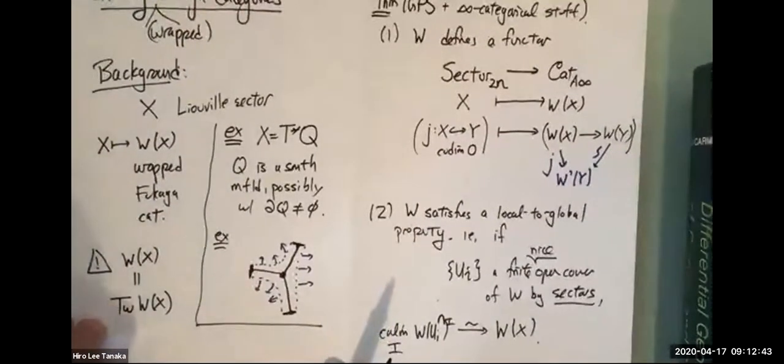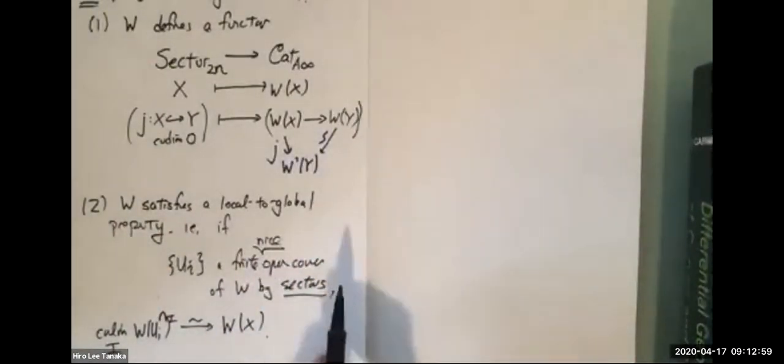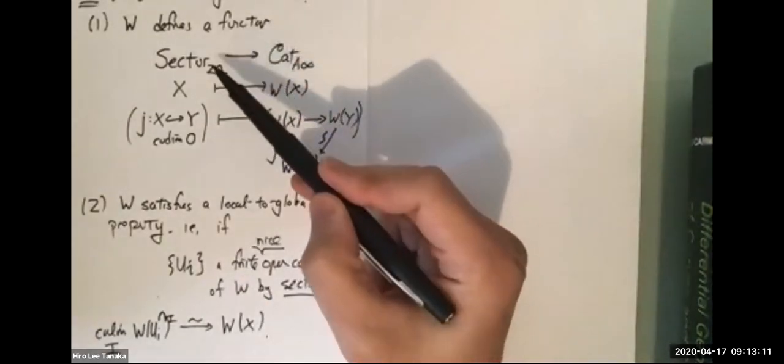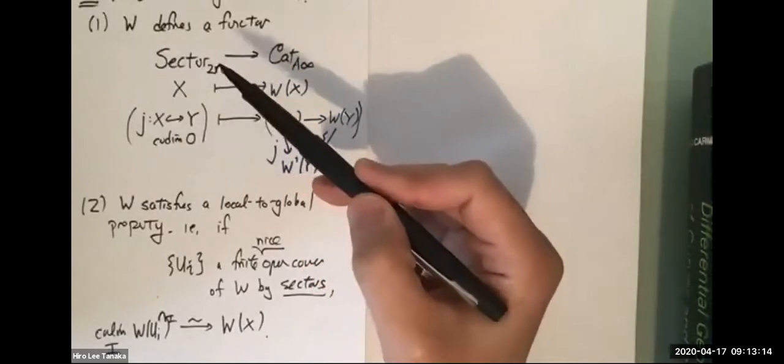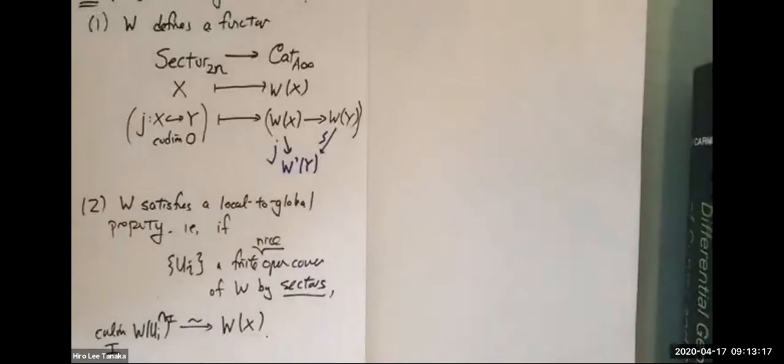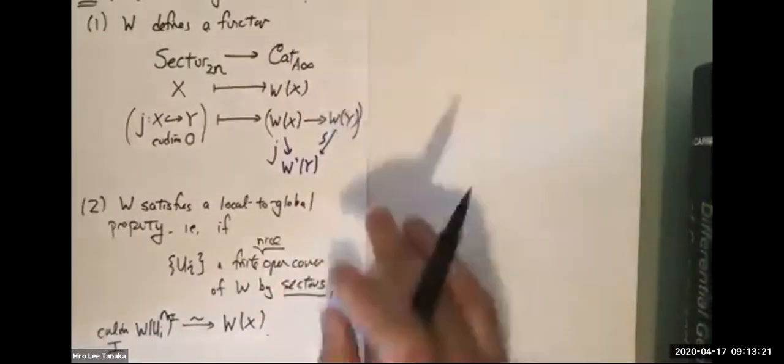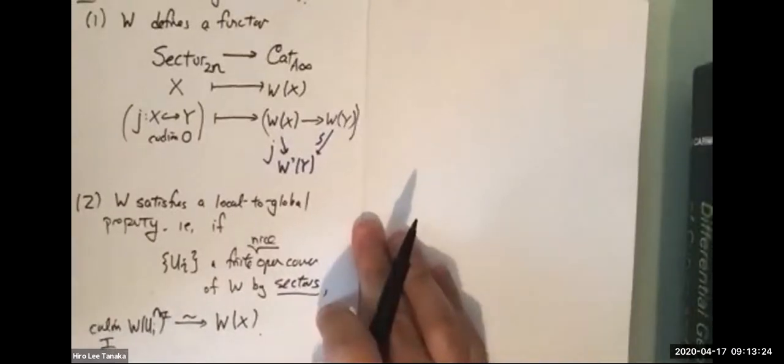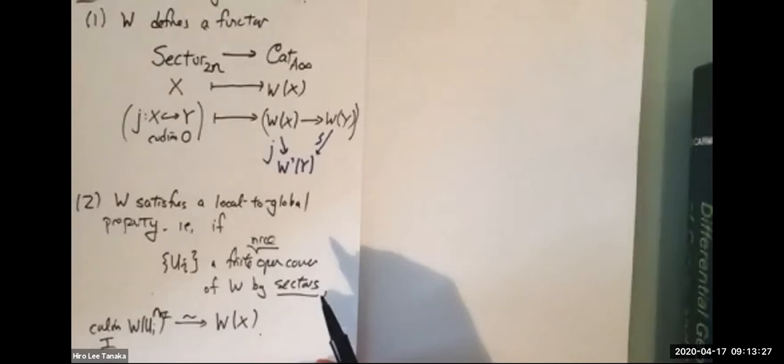There's a question from Ryan Grady: is Sector actually a site? I think you would want it to be. I'm not sure if the property of being a sectorial open cover is preserved under pullbacks, but I think that if you set up the formalism correctly, modulo those analytical technical difficulties about needing covers to be nice, you would expect that Sector_{2N} does form a Grothendieck site.